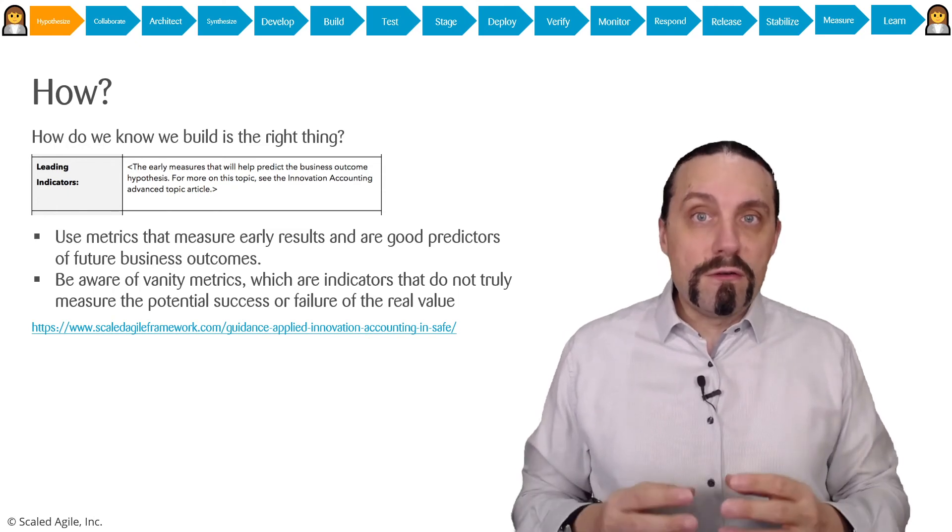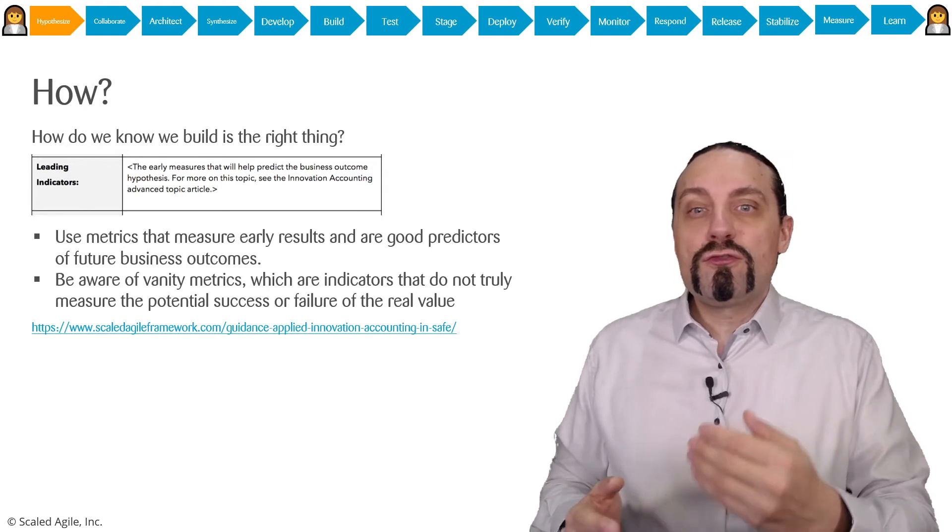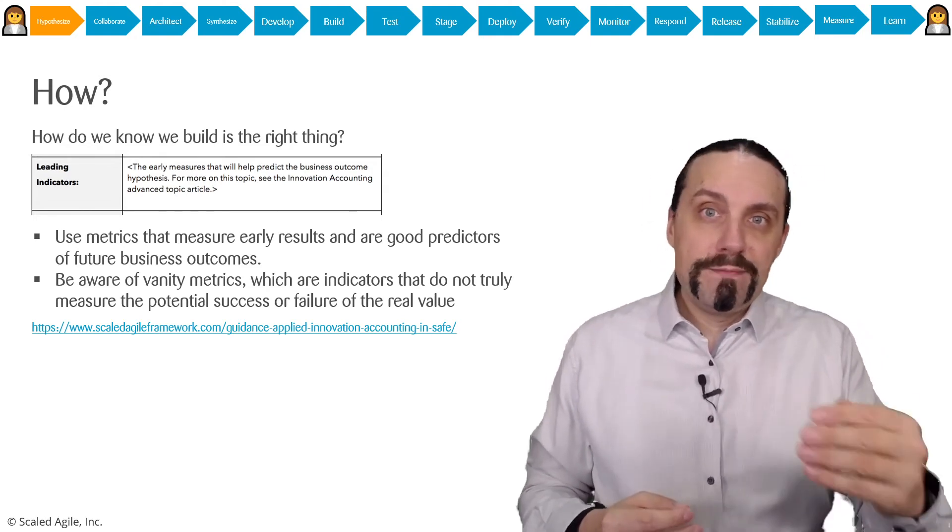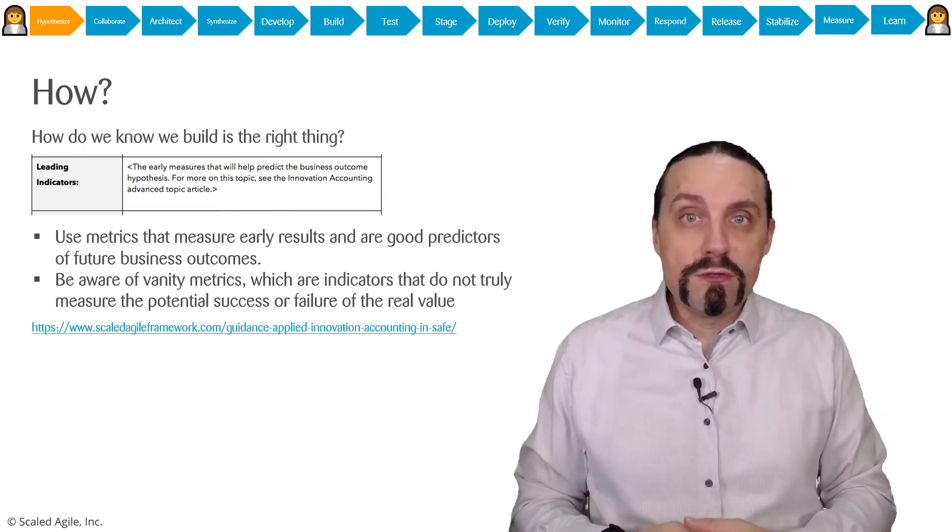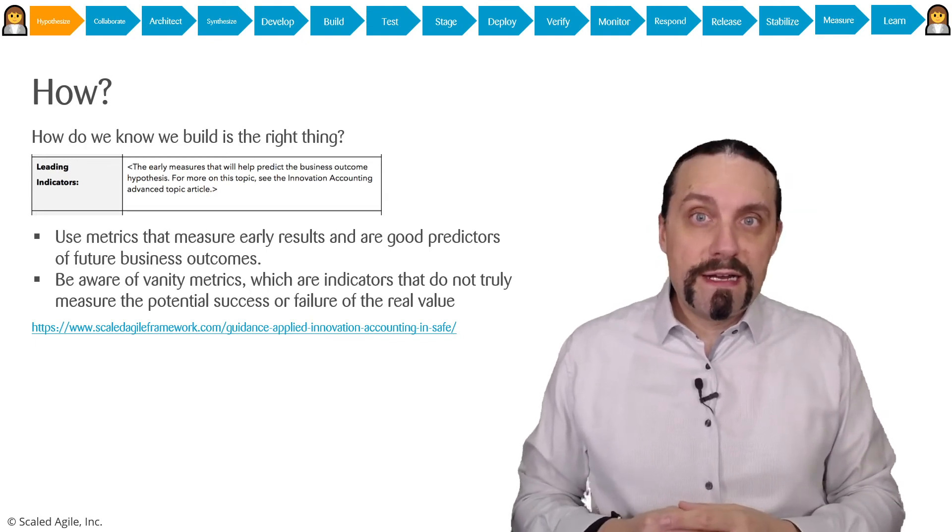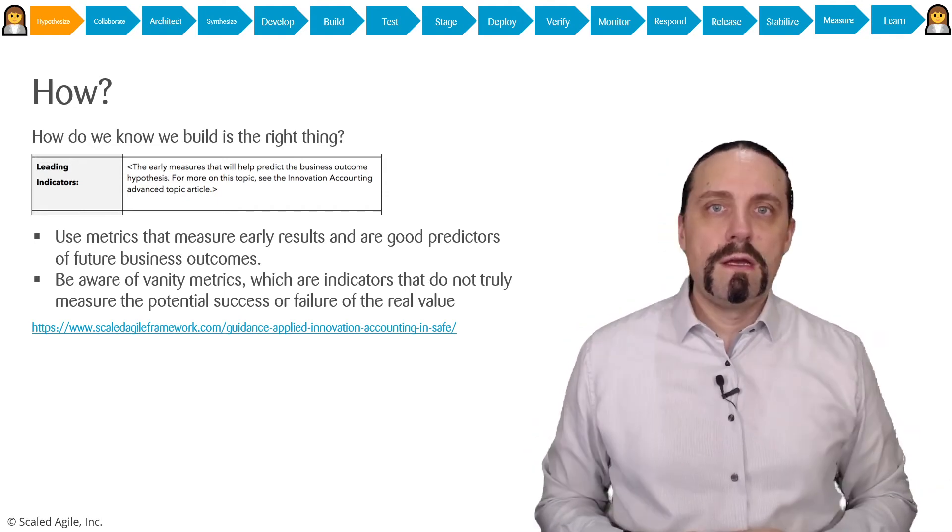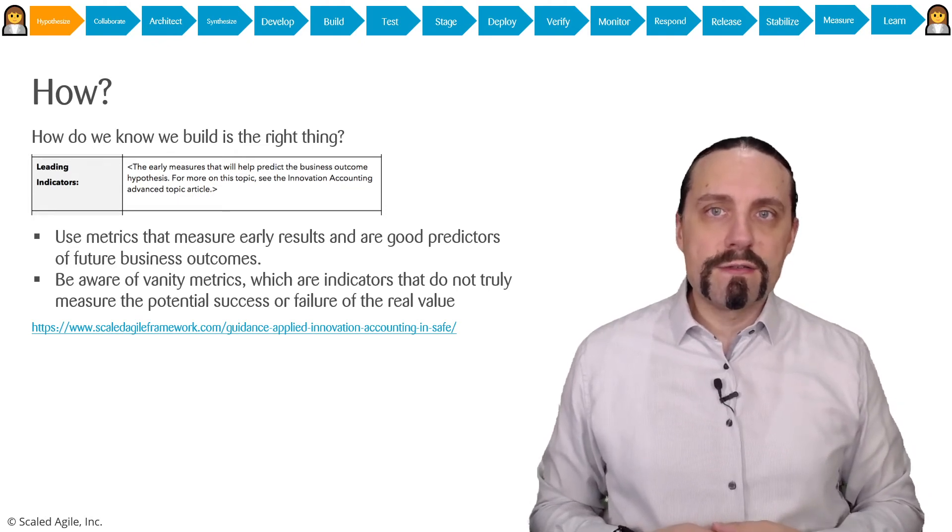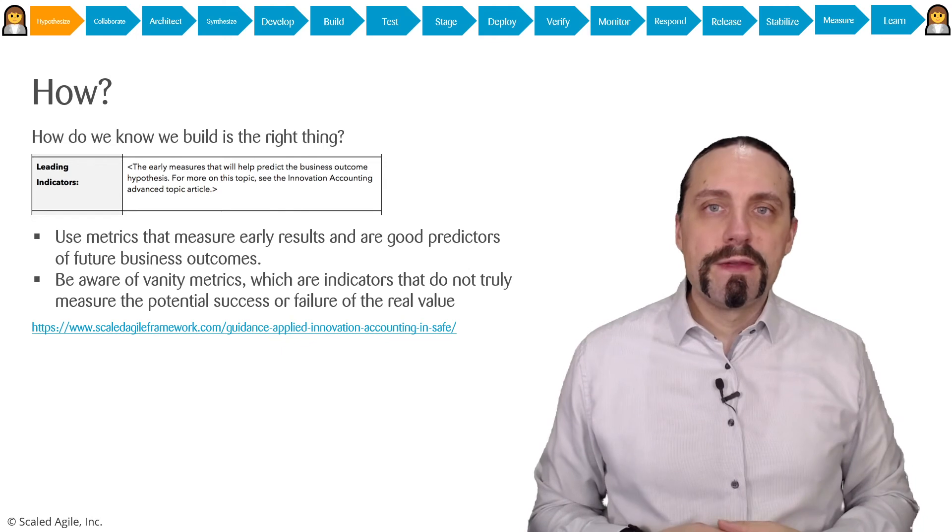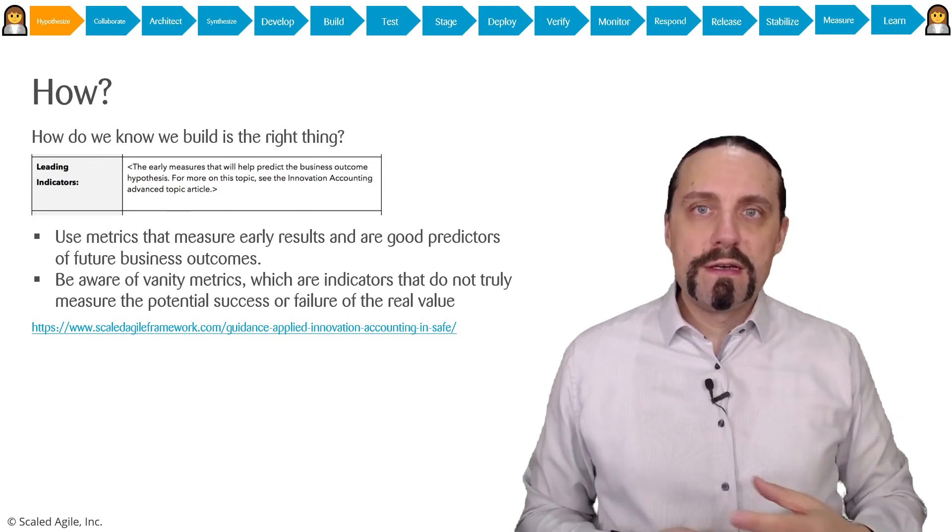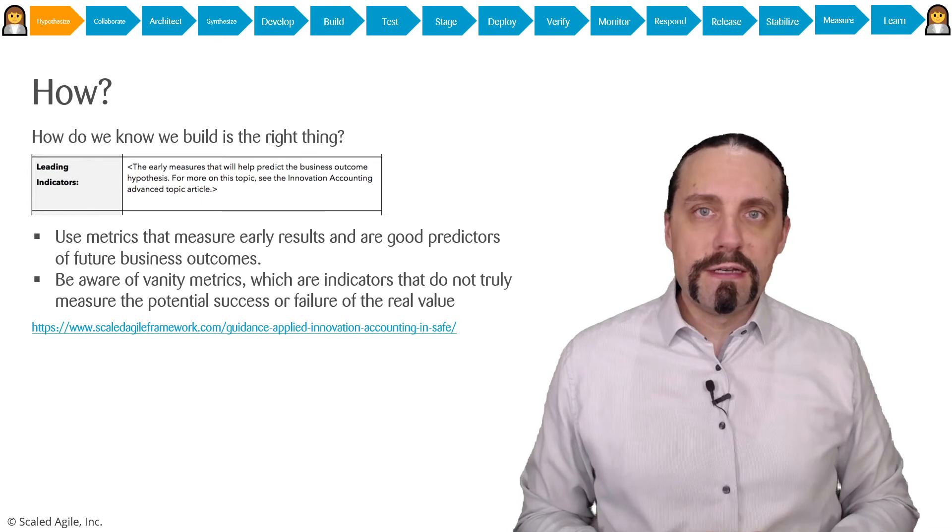Be also aware of vanity metrics. Vanity metrics are metrics which are indicators which do not truly measure the real business outcome. So vanity metrics can for example be number of downloads or number of users. So be always aware of these vanity metrics but also vanity metrics can change from context to context. There is a very good article about the leading indicators about innovation accounting on the Scaled Agile framework homepage. You can see the link here and it also has some good examples how you can measure and how measuring these leading indicators has been done in other companies.